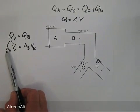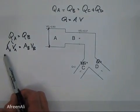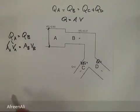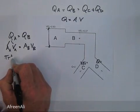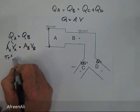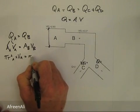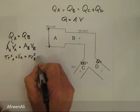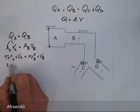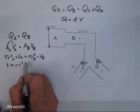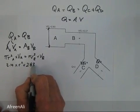We're looking for the diameter at A, so we substitute the area. The area at A is pi R squared because it's a circular pipe. So we have pi R squared at A times the velocity at A. We know pi is 3.14, we don't know the radius, and we know the velocity at A is 2.83.